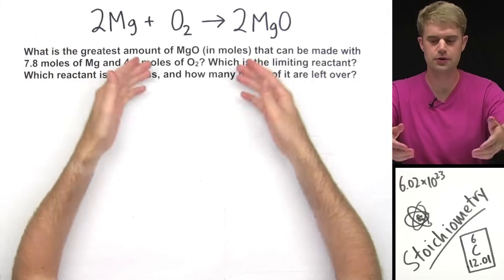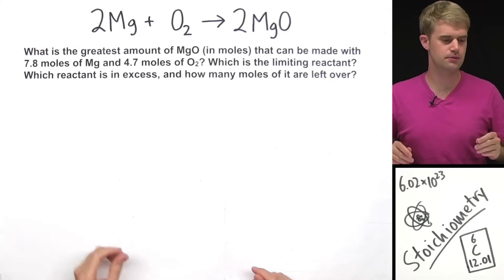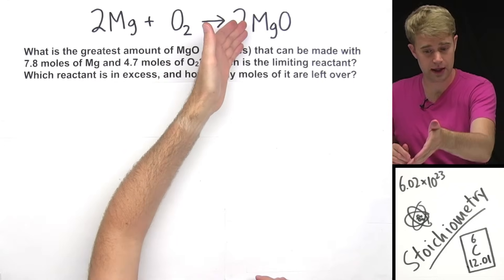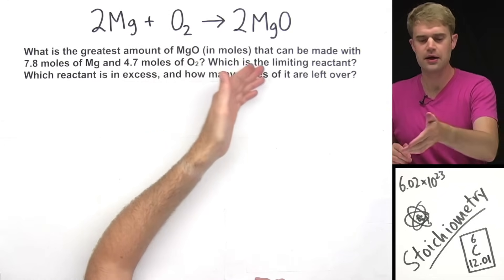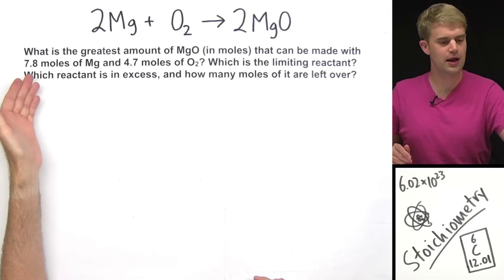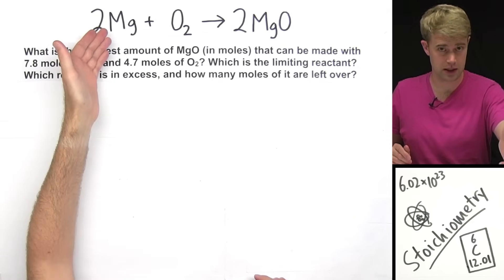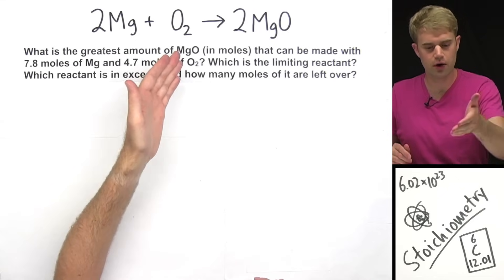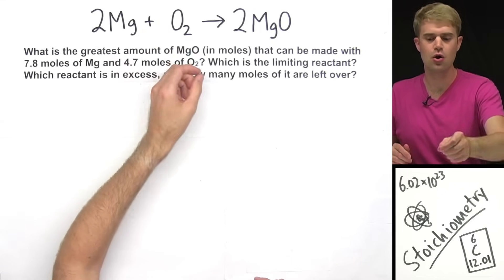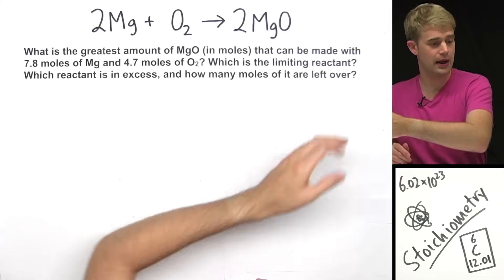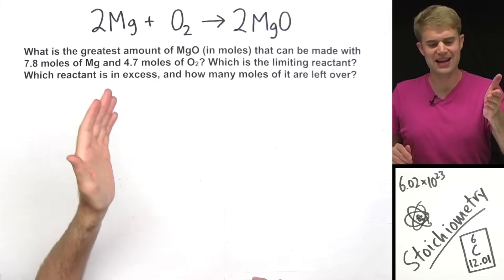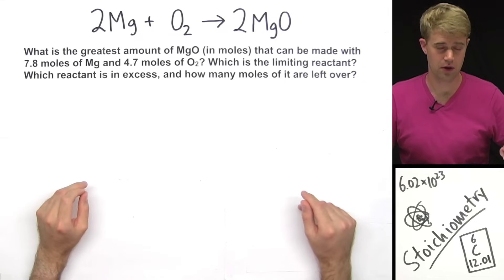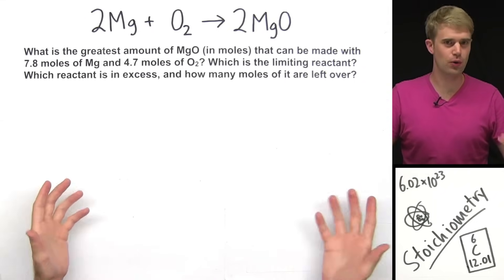We're going to use this equation to answer the following questions: What is the greatest amount of MgO in moles that can be made with 7.8 moles of Mg (Magnesium) and 4.7 moles of O2 (Oxygen)? Which is the limiting reactant, which reactant is in excess, and how many moles of it are left over?